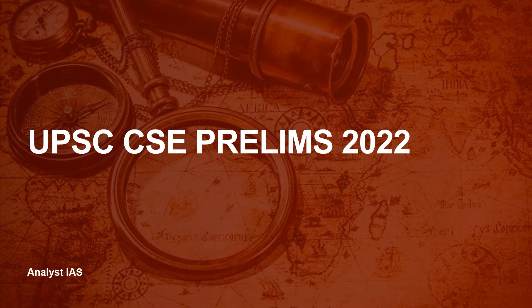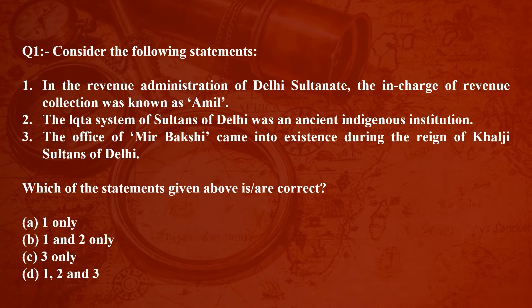Hello everyone, welcome to Analyst IAS. This is the fifth episode of the important history question discussion series for UPSC Prelims 2022. Question number one: Consider the following statements. Statement one: In the revenue administration of Delhi Sultanate, the in-charge of revenue collection was known as Amel. Statement two: The Iqta system of Sultans of Delhi was an ancient indigenous institution. Statement three: The office of Mir Bakshi came into existence during the reign of Khilji Sultans of Delhi. Which of the statements is/are correct? Option A: one only; Option B: one and two only; Option C: three only; Option D: one, two and three.